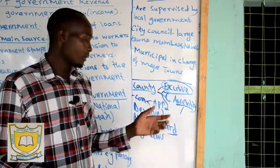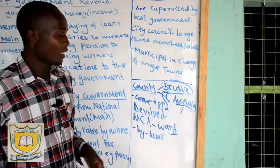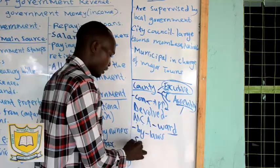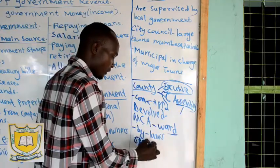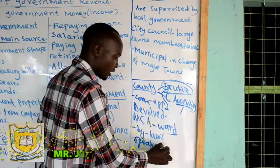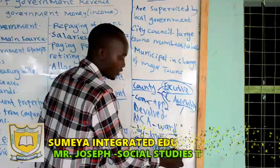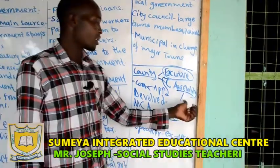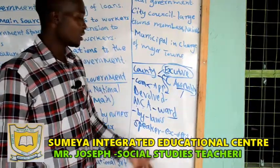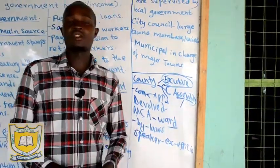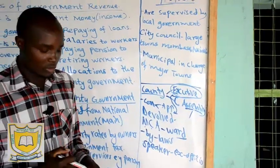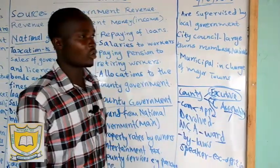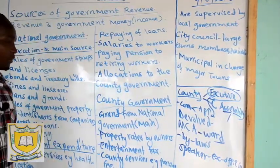The county government makes laws to govern the county, though it depends on and works together with the national government. In the county assembly we also have the speaker. The speaker is an ex-officio member of the county assembly, elected by the members of the county assembly.